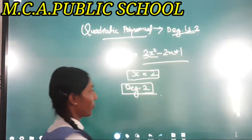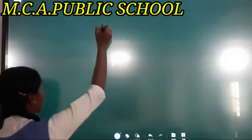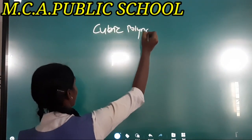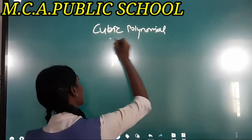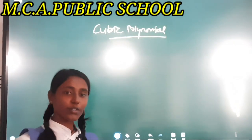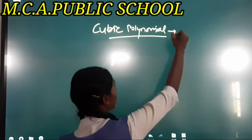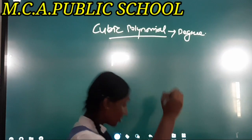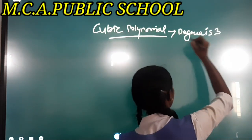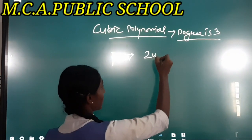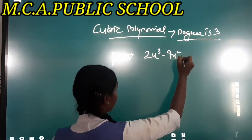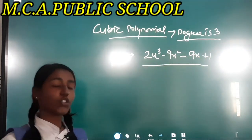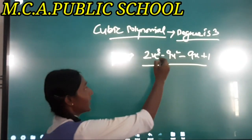A cubic polynomial is a type of polynomial whose degree is three. For example, 2x³ − 9x² − 9x + 1 is an example of a cubic polynomial because the degree of this polynomial is three.